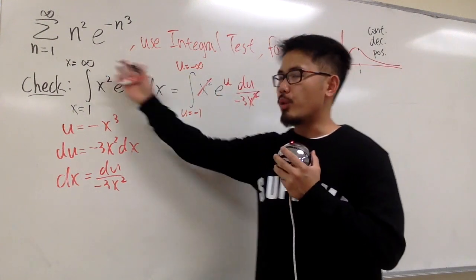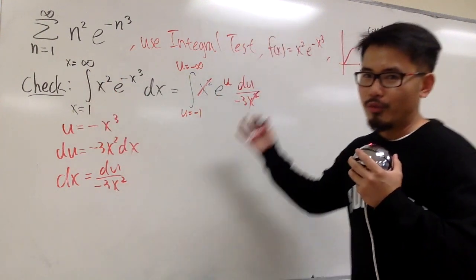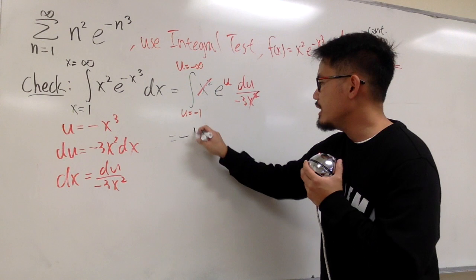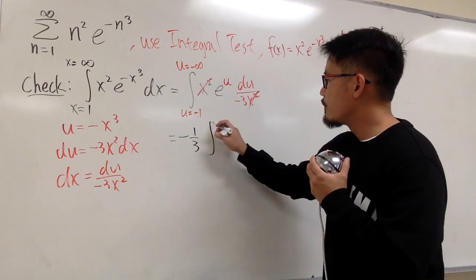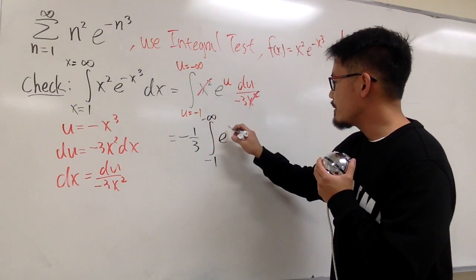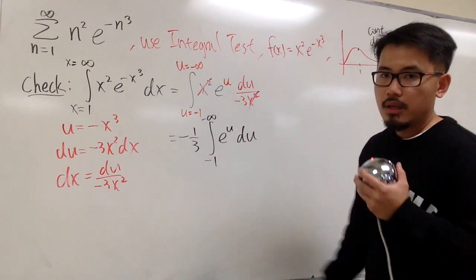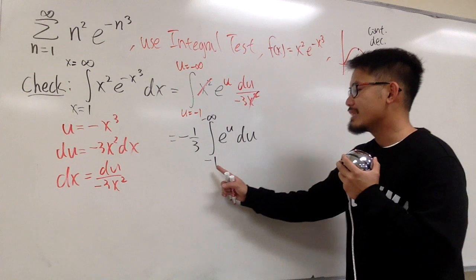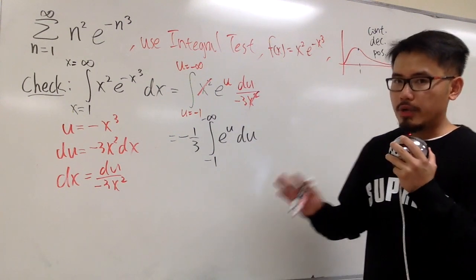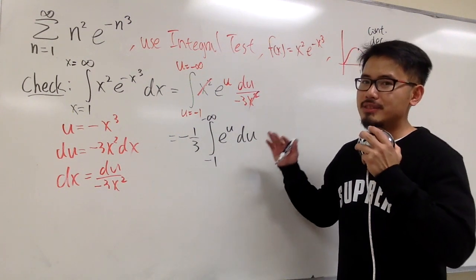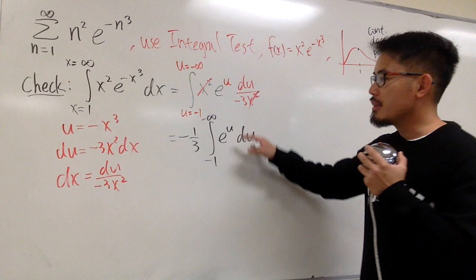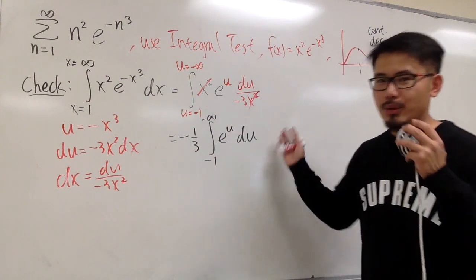We focus on whether this gives a finite value. Taking out the constant, we have negative 1/3 times the integral from negative 1 to negative infinity of e to the u du. Note that negative 1 is technically bigger than negative infinity — but that's okay, we just apply FTC: find the antiderivative, plug in the upper limit, then subtract the lower limit.